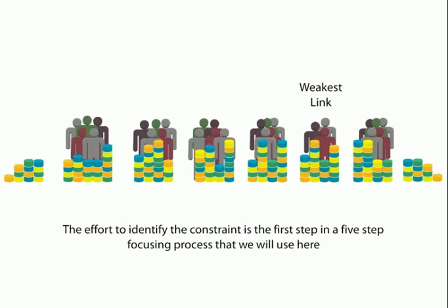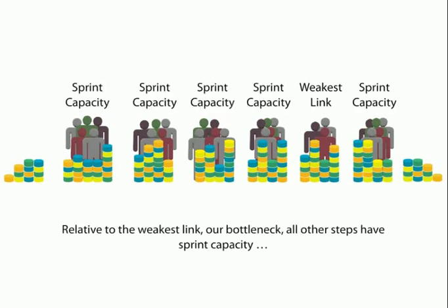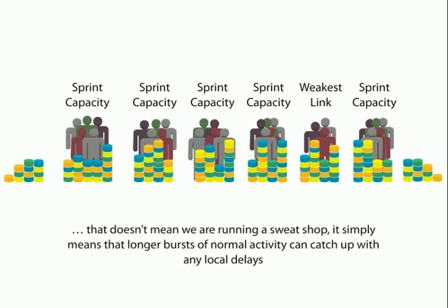This is the first step in a five-step focusing process that we will use here. Relative to the weakest link, which is nothing but a bottleneck, all other steps have sprint capacity or surplus capacity. By sprint capacity, we mean that they are able to increase the output of the system in regular work hours. The weakest link doesn't have that luxury.